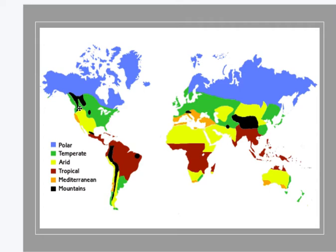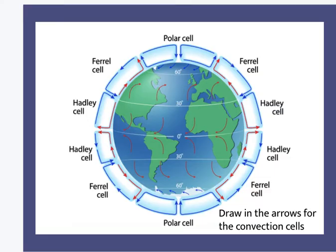As a quick review, biomes around the Earth are usually functions of their latitudinal gradient. Tropical rainforests are right at the equator. At 30 degrees north and south we have deserts — these distributions are functions of the convection cells.